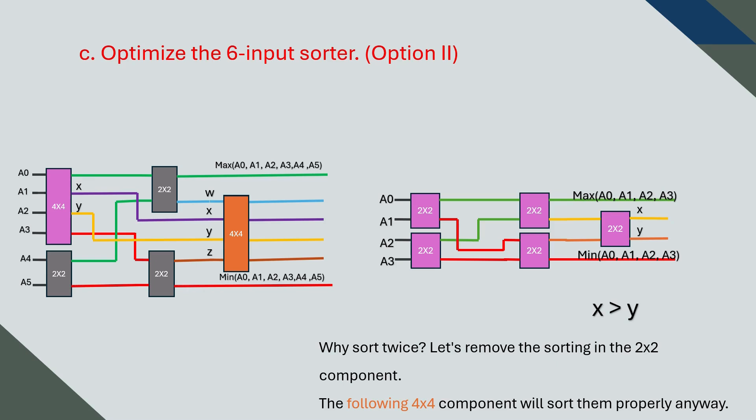As a result, we can safely remove the extra two-on-two sorter that was previously used for them. Just like that, we have reduced the design once again. By removing this unnecessary component, we have saved a two-on-two sorter unit, making the overall system more efficient.